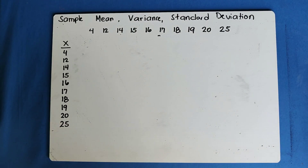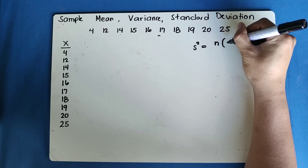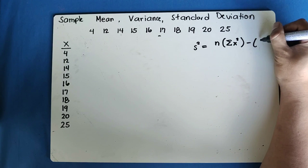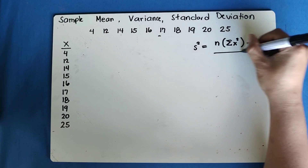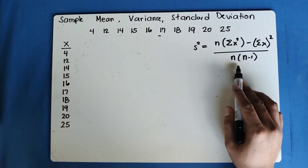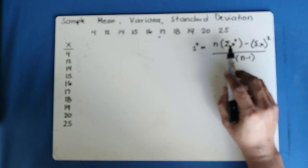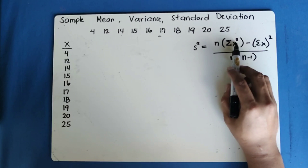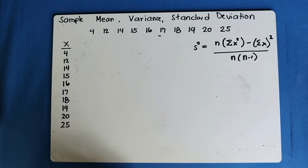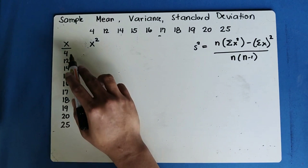The second formula in getting the sample variance is: S-squared equals n times the summation of x-squared, minus the summation of x squared (with the square outside the parenthesis), all over n times (n minus 1). Notice there are two summation-of-x terms here: one where the square is inside the parenthesis, and another where the square is outside. First, we are going to find the square of each data value.